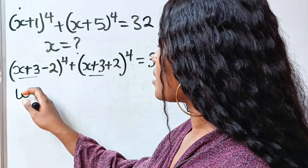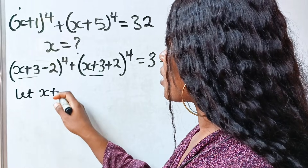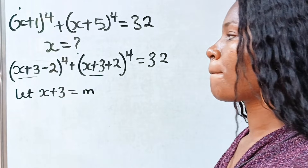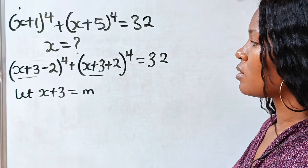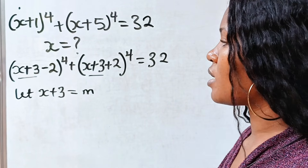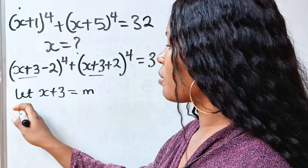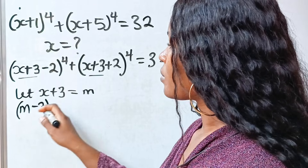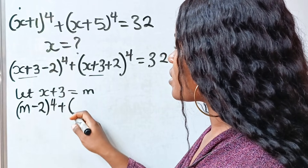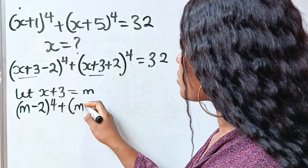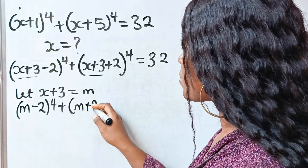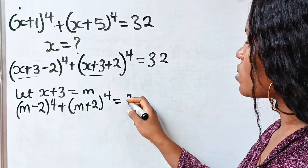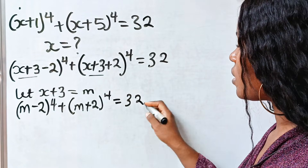Let x plus 3 be equal to m. So that means we have (m minus 2) raised to the power of 4 plus (m plus 2) raised to the power of 4 is equal to 32.